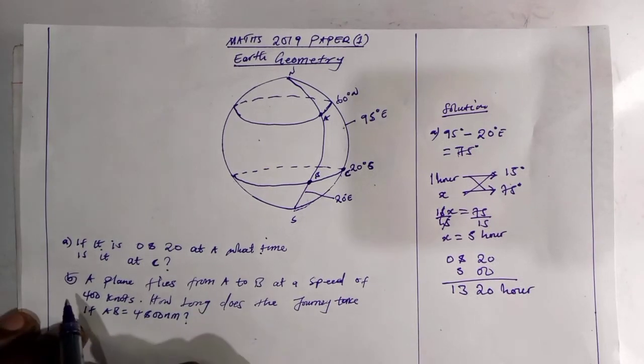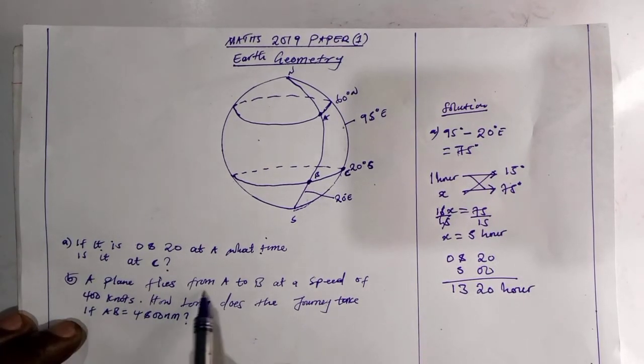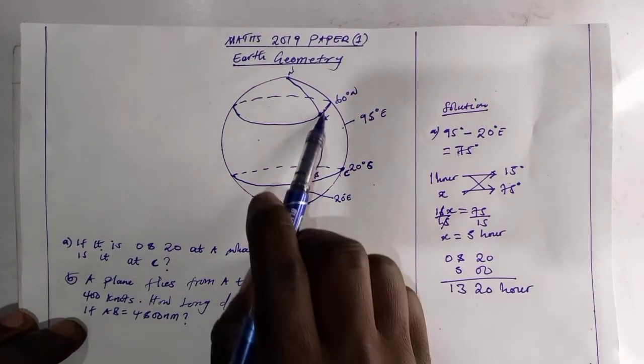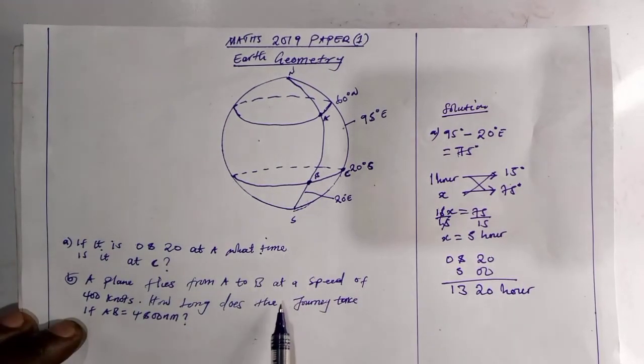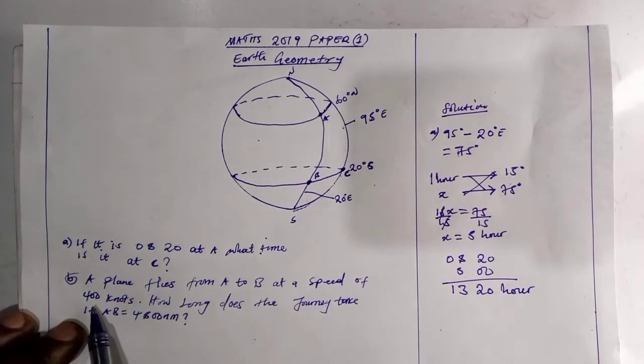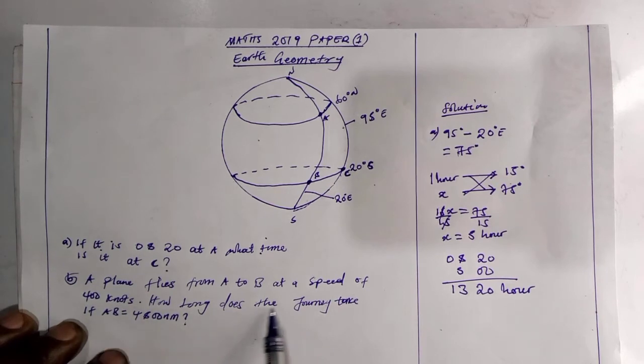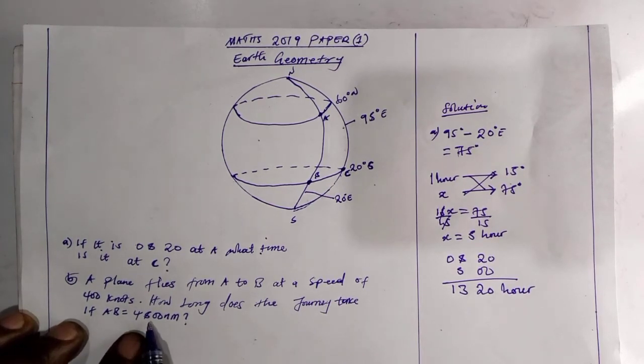So now let's find, for B, a plane flows from A to B at a speed of 400 knots. How long does the journey take if AB is equals to 4800?